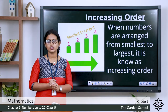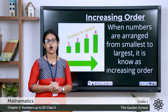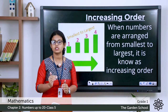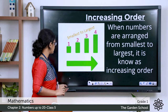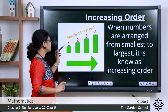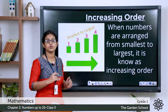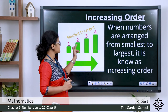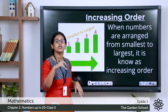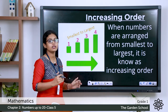When you arrange numbers from the smallest to largest, we call it as increasing order or ascending order. Here you can see a picture. Imagine that you are standing on the first block, and from the first block you jumped to the second block, from the second block to the third, and from the third to the fourth — each time you are jumping to a higher level.